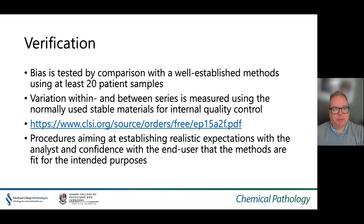In a verification experiment, bias is one of the most important experiments and can be tested by comparison with well-established methods using at least 20 patient samples. The other most important assessment is of imprecision, and variation within and between series is measured using stable materials or internal quality control. These procedures are aimed at establishing realistic expectations with the analyst and confidence with the end user that the methods are fit for the intended purpose.